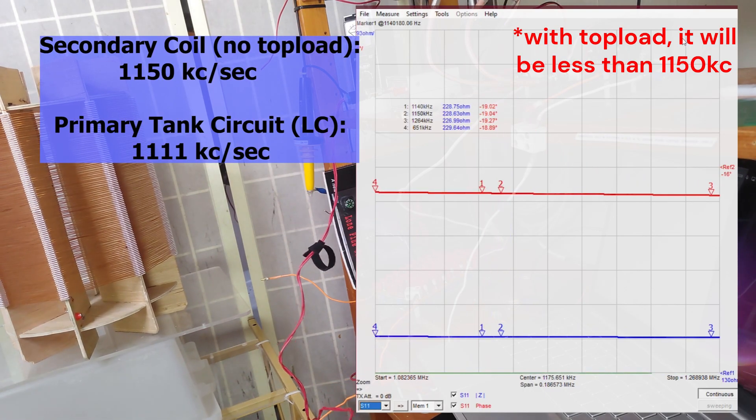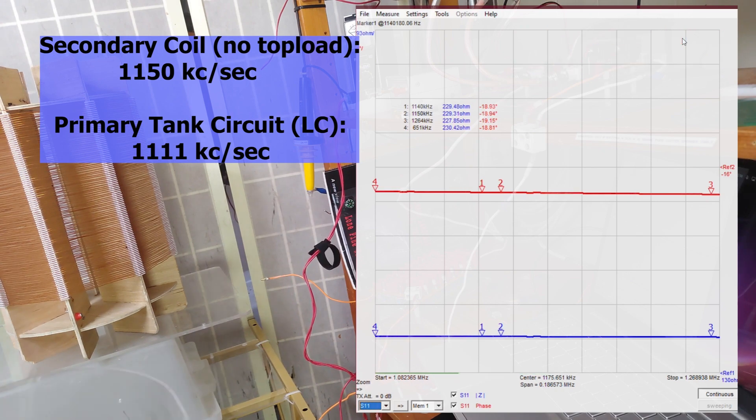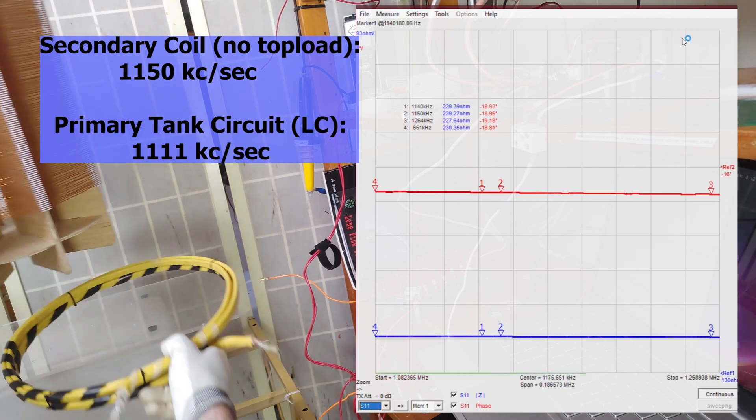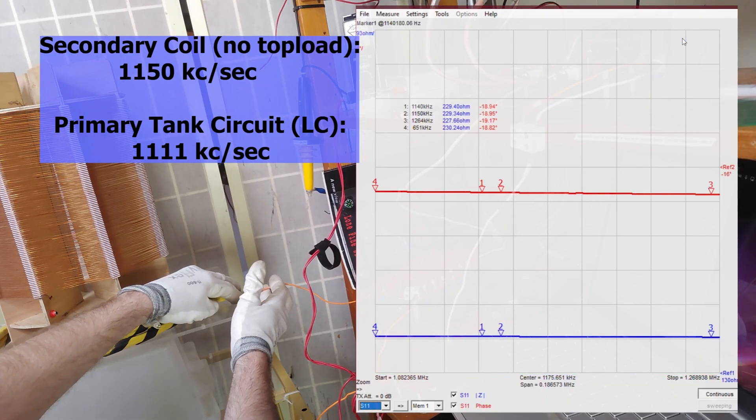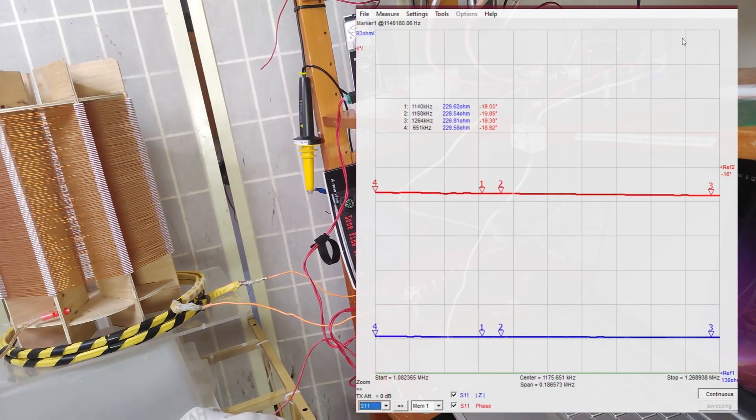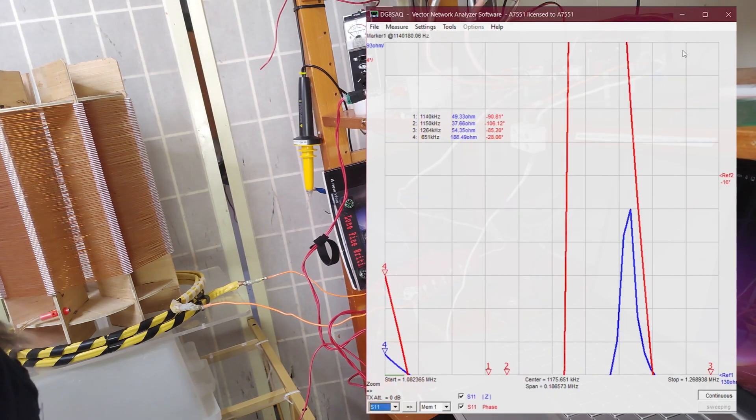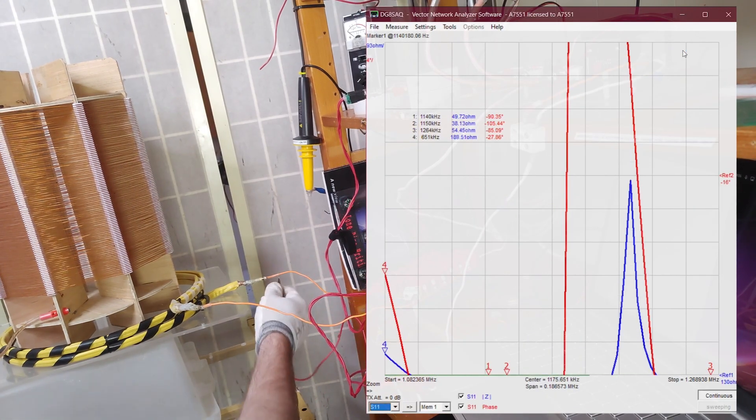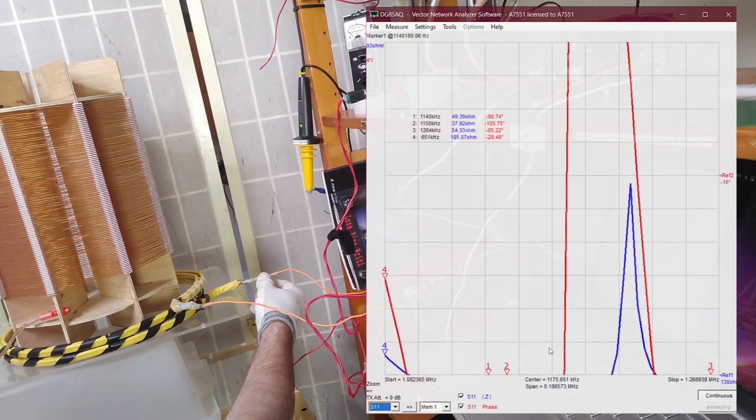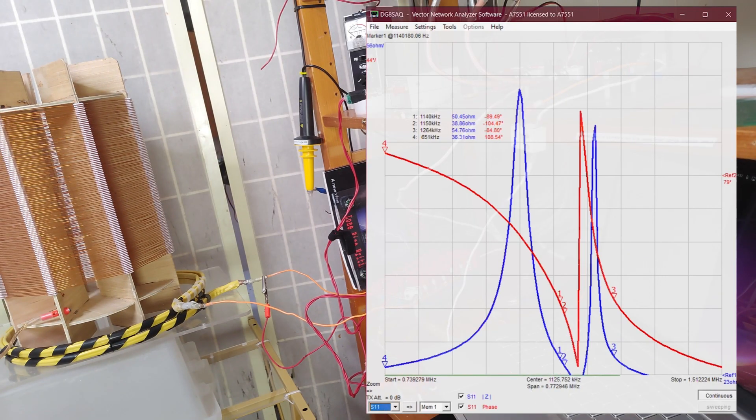Now let's try the primary fed secondary, the whole system all together. The positive lead of the VNA is at the beginning of the circuit, negative is going on the other end of the primary. We've got the primary and the secondary in communication, everything is in situ.